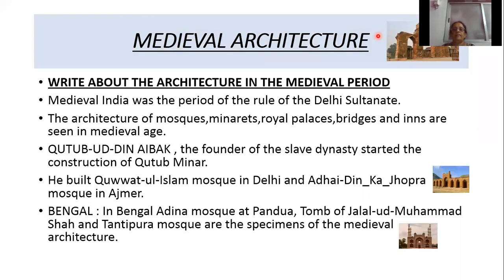Medieval architecture. Write down this question in your textbook: Write about the architecture in the medieval period. Medieval period means the period between the ancient period and the modern period, from the 5th century to the 15th century. During that period, India was ruled by the Sultans — Muslim kings known as the Sultanate. Medieval India was the period of the rule of the Delhi Sultanate.